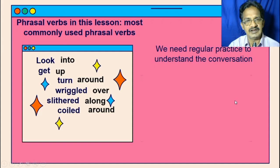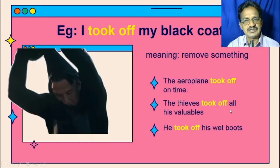Observe this example used in our lesson: 'I took off my black coat.' This is the meaning of 'taking off.' 'Take off' is the present and 'took off' is the past form of 'take off.' We can use them in different tenses, just like how normal verbs are used. Phrasal verbs are also used in different tenses according to the situation. The aeroplane took off on time — 'take off' means leaving from the ground surface.